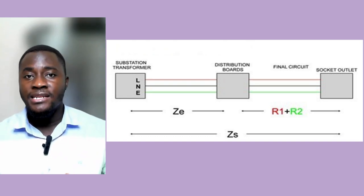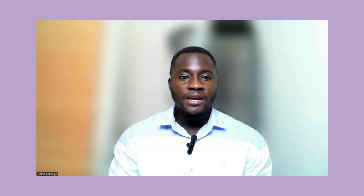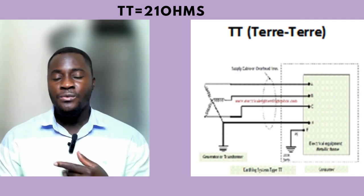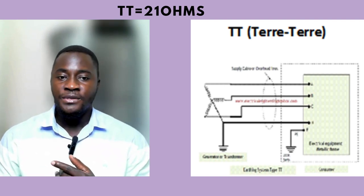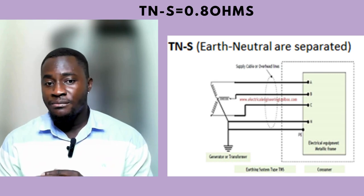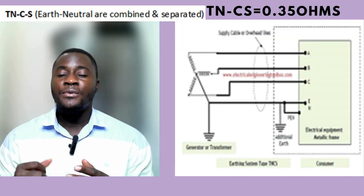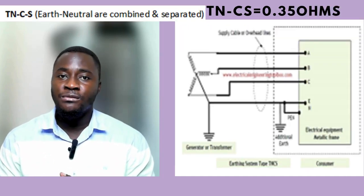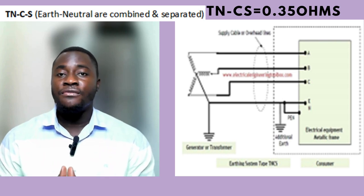The test conducted at the DB side is called ZE. The values we should obtain for ZE should be in accordance with the supply authority's maximum external impedance, which depends on the earthing arrangement. For the TT system, the maximum impedance is 21 ohms; for TNS it is 0.8 ohm; and for the TNCS system the maximum earth fault loop impedance is 0.35 ohm, which is very important for us to understand.